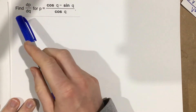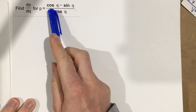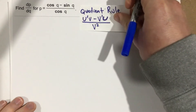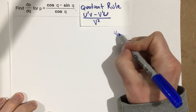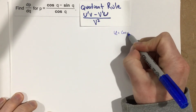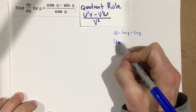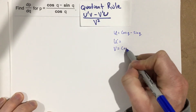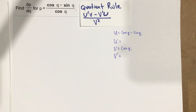This is problem number 10 for section 3.5. We need to find the derivative of P with respect to Q for (cosine Q minus sine Q) over cosine Q. We have a division, which means we're going to use the quotient rule. I'm going to let U equal cosine Q minus sine Q, and V equal cosine Q, and then find U prime and V prime.